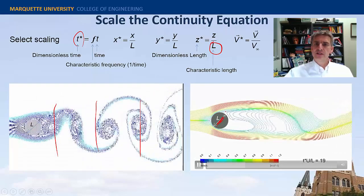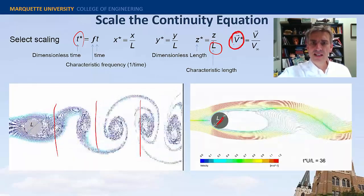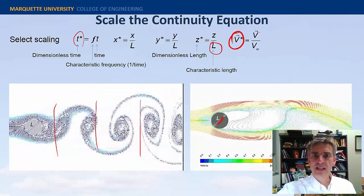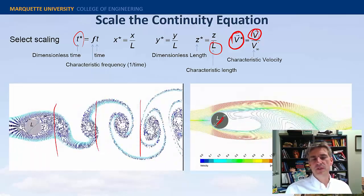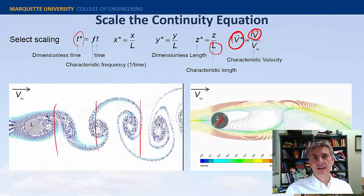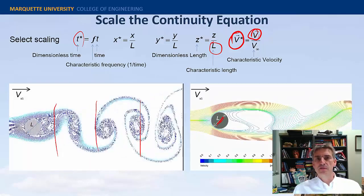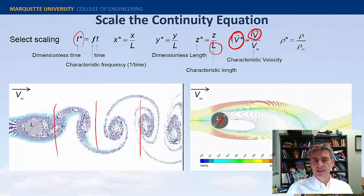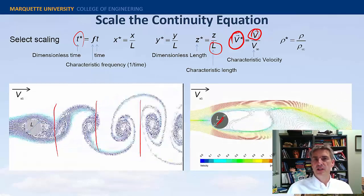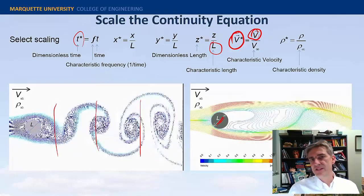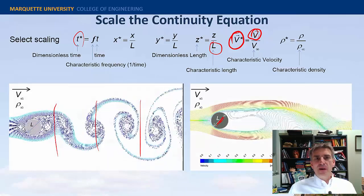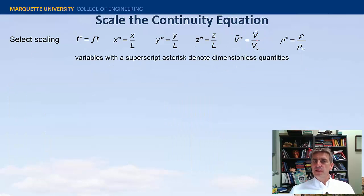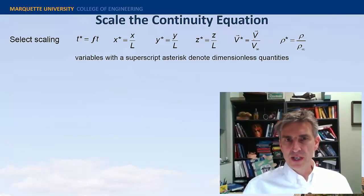What about the velocity? We've got dimensionless velocity, and we're going to get that by taking the regular velocity and dividing by some characteristic velocity. The obvious choice for this flow field would be the freestream velocity upstream of the flow. Finally, we could non-dimensionalize the density by the air density, or whatever fluid this is. With these in mind, we have a complete set of parameters associated with the continuity equation.